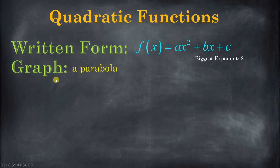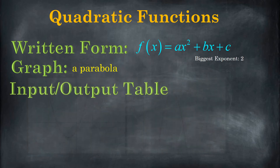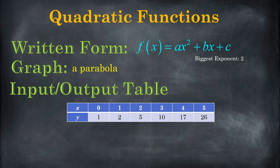Now let's talk about the graphs. The graph of a quadratic equation has a special shape with a special name — it's called a parabola. For quadratic functions, they either go up, like the example on the left, or they go down, like the example on the right. They're going to have either a minimum value — a smallest output, like this one has a smallest output of negative two — or they're going to have a maximum value, like this one here, which has a maximum value of 32.5. So if you have a parabola, you know your function is quadratic.